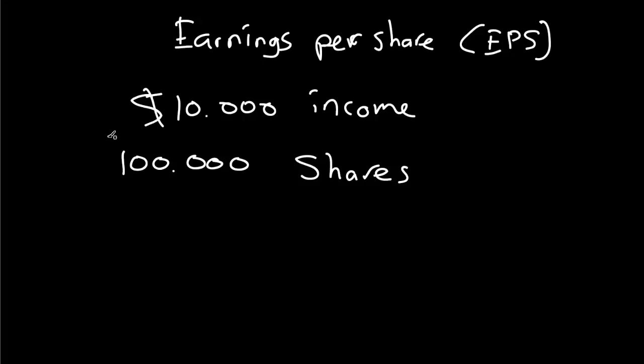What this means is that per share, if you divide the total income of the business by the number of shares, you get the earnings per share, which in this case is $0.10 per share.